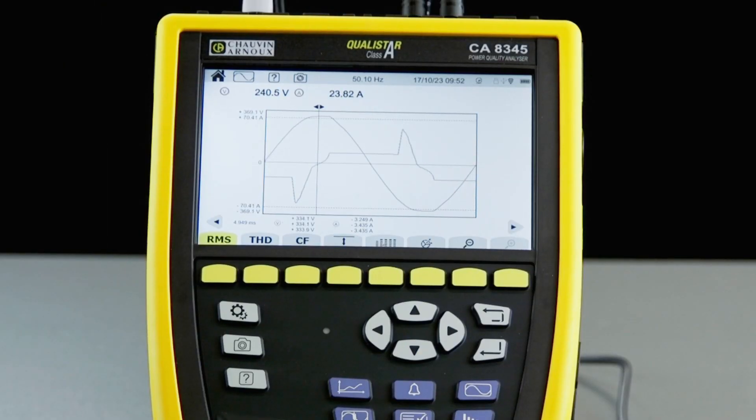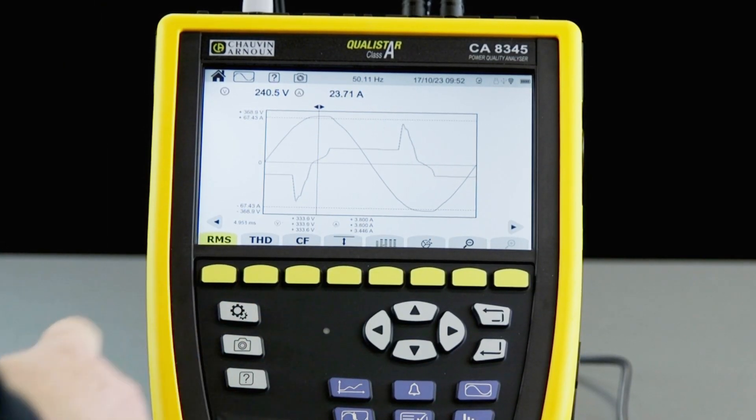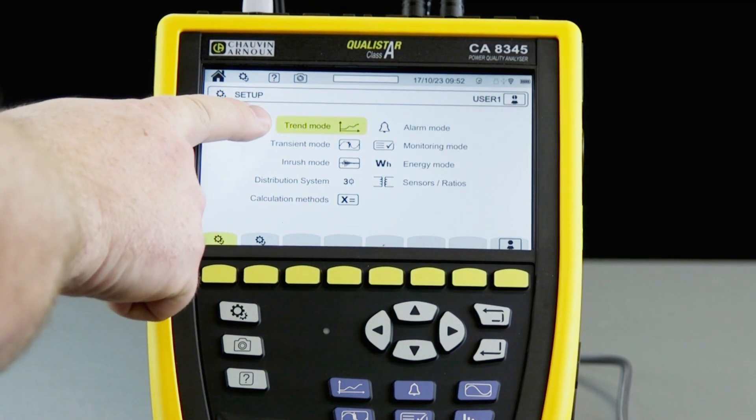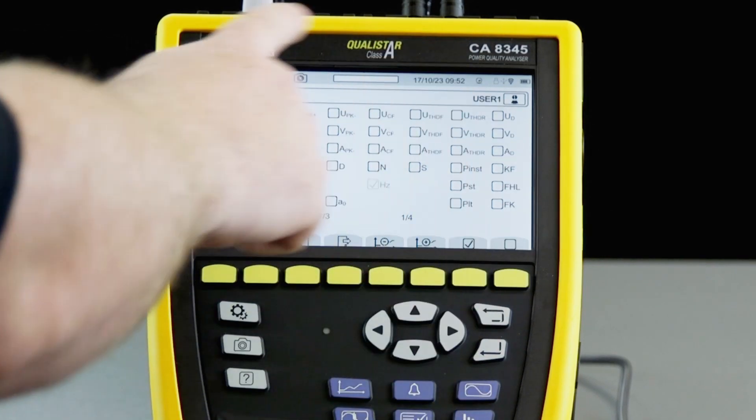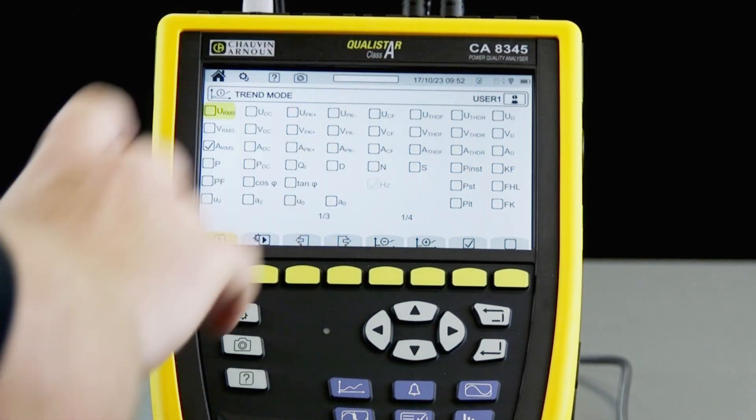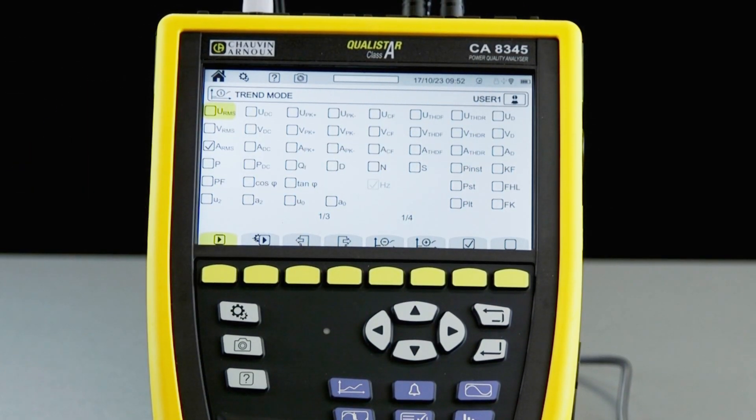So let's zoom in and I'll show you how to configure a trend logging session on the CA 8345. First we need to define the trend mode. So we go to settings and trend mode.